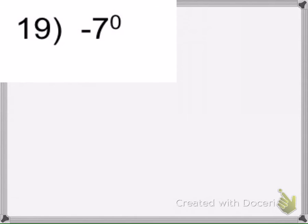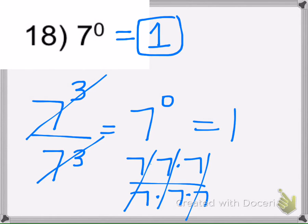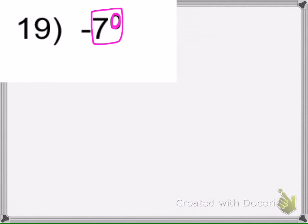Okay, here, the 0 exponent is only going to the 7. On this problem here, it was just going with the 7, so it equaled 1. But on this problem here, it has a negative, and the negative gets dropped down. So anything to the 0 power in this case is 7. If we wanted the negative included, it would have been written like this.